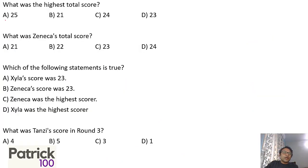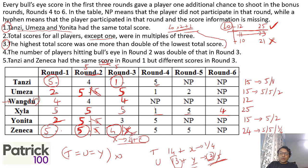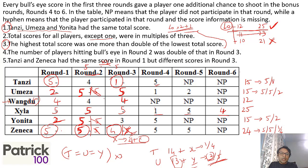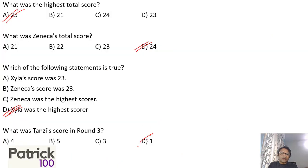Let's answer the questions. The highest total score is 25. Zeneca's total score was 24, so option D. For which statement is true — we know Zyla had the highest score. And Tanzi's score in round 3 was 1, so option D. Once we get the table, we can get the answers. Getting the table was tricky, but working through it systematically gives us the solution. Thank you.